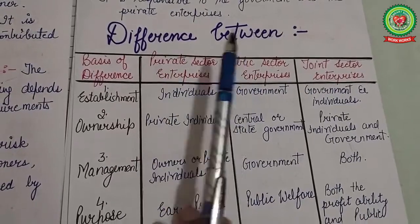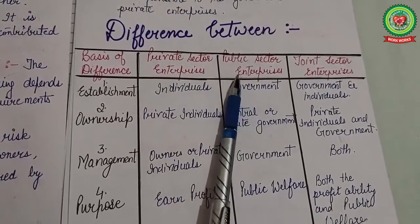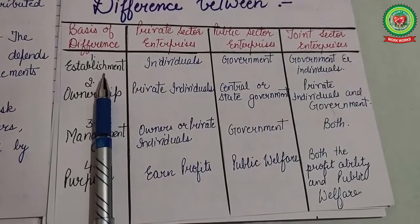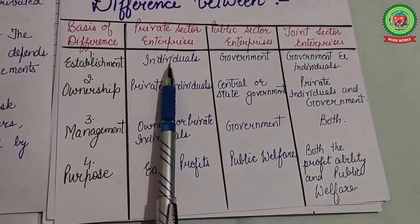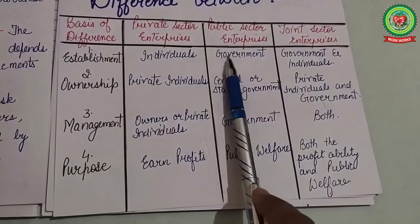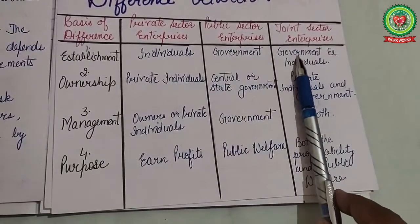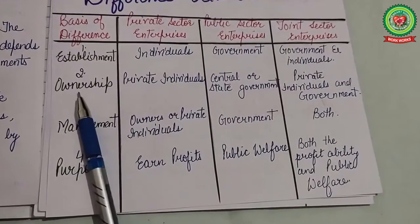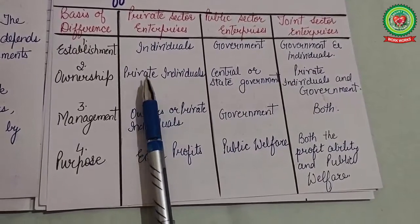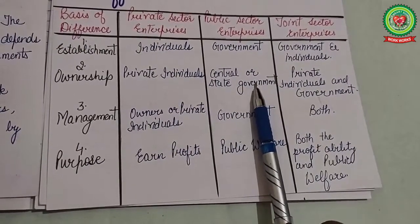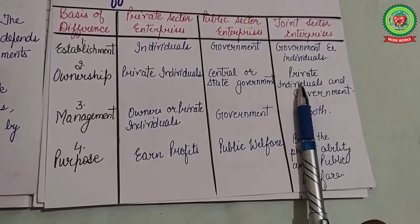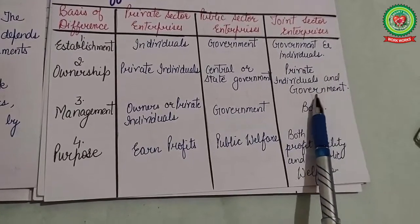Next topic is the difference between private sector, public sector, and joint sector enterprises. The first difference is establishment: private sector enterprises are established by individuals, public sector enterprises are established by the government, and mixed sector enterprises are established by both government and individuals. The second difference is ownership: private sector is owned by private individuals, public sector is owned by the central or state government, and joint sector is owned by both private individuals and the government.